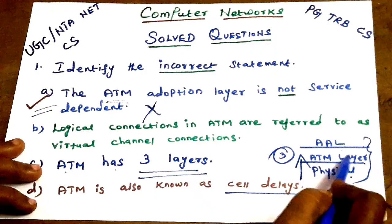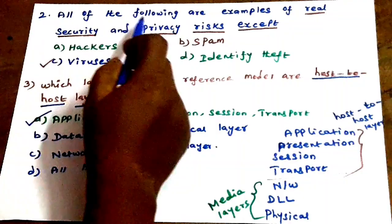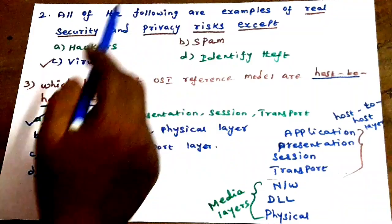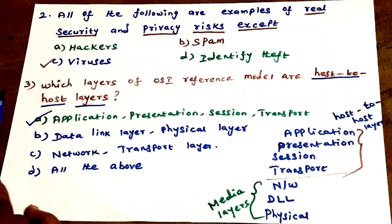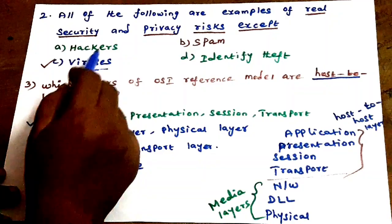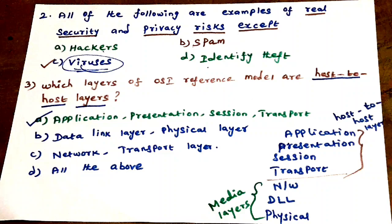Next question: All of the following are examples of Real Security and Privacy Risk, EXCEPT — find the odd one out. The answer is C: VIRUS.